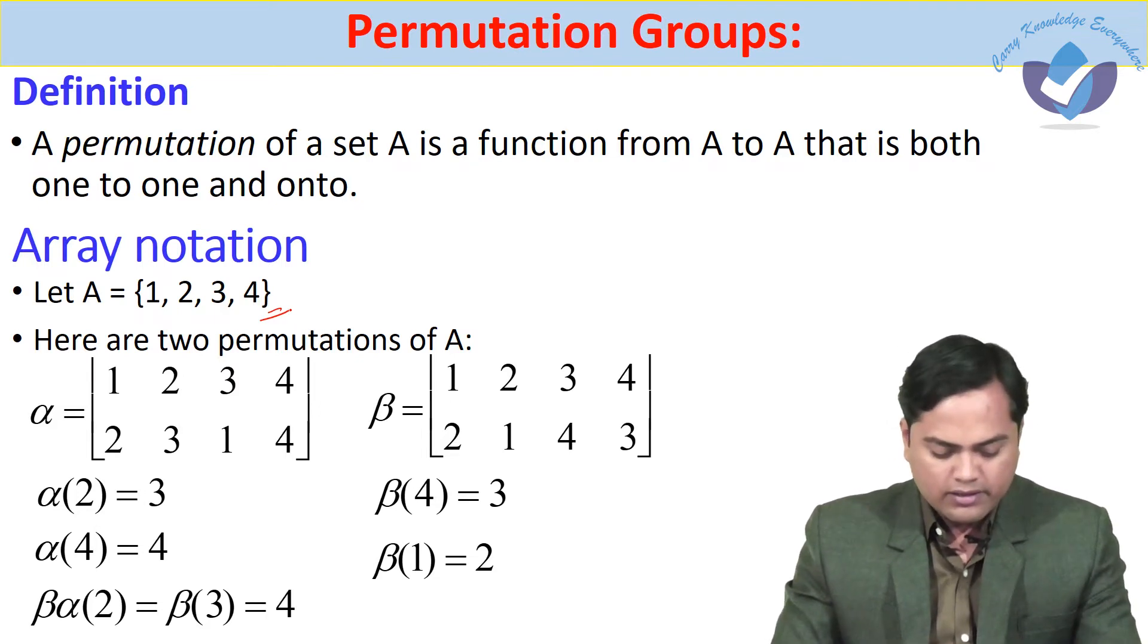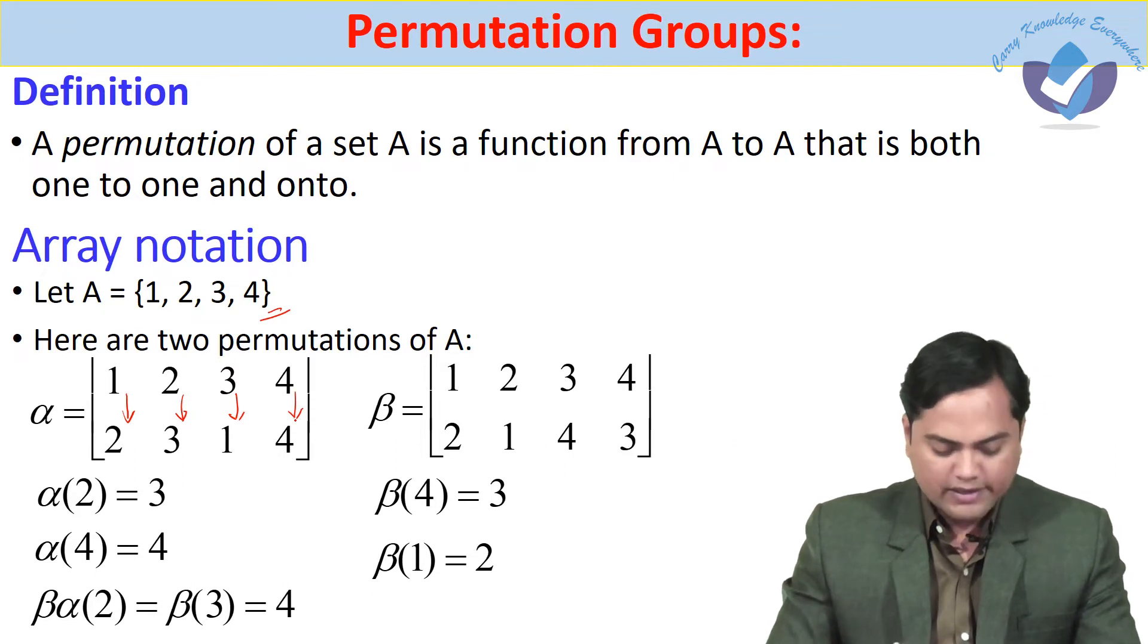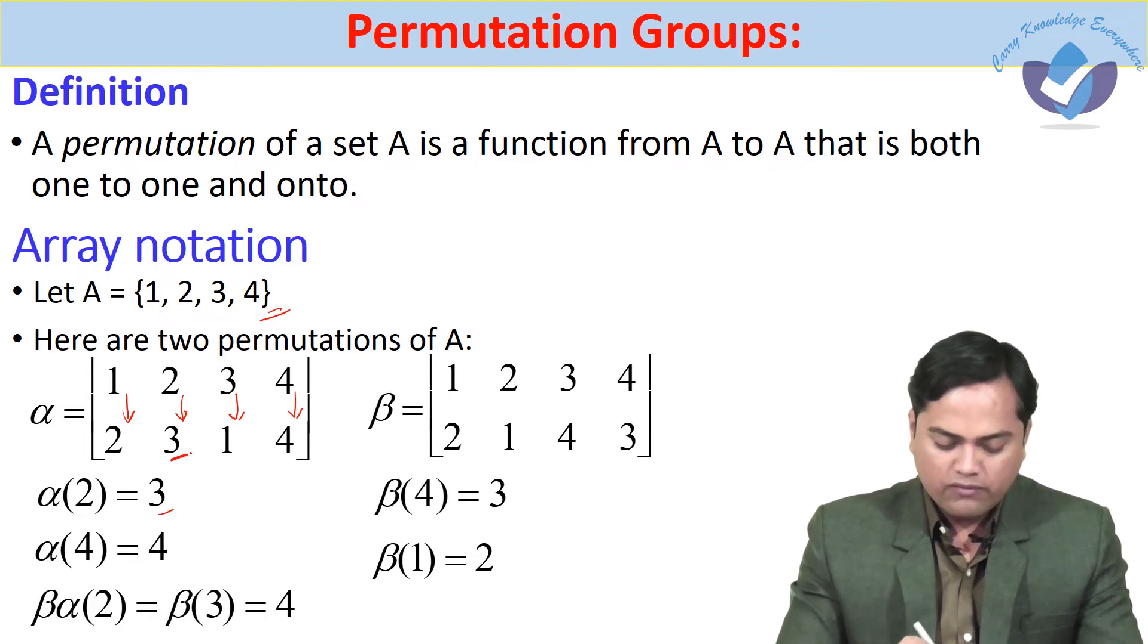Alpha gives us the values: 1 goes to 2, 2 goes to 3, 3 goes to 1, and 4 goes to 4. So alpha(2) = 3, alpha(4) = 4.